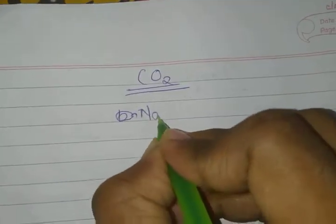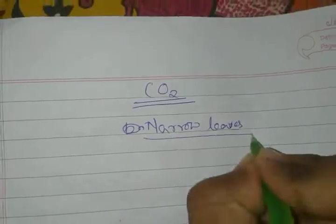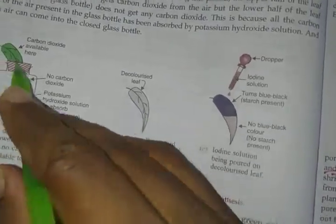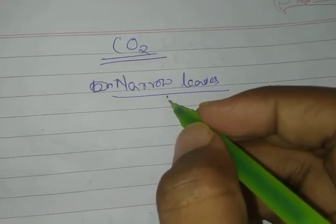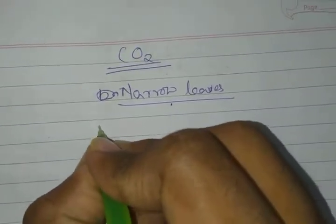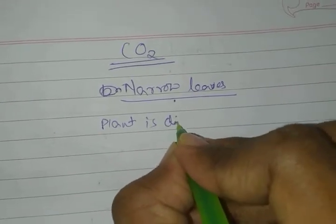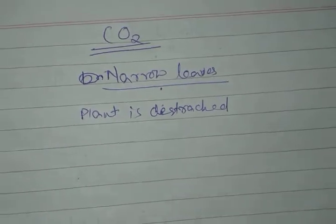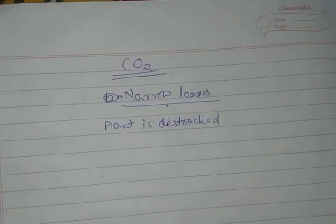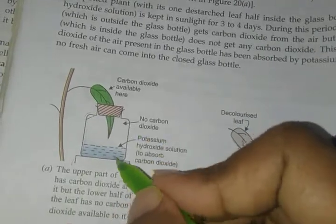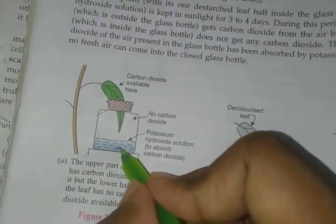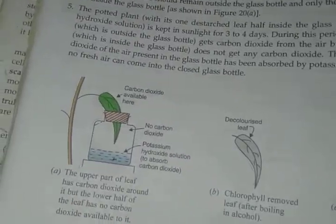For the carbon dioxide experiment, we will take a plant with narrow leaves — the leaves should be tapering. First, the plant with narrow leaves is de-starched. After that, you need to perform some extra steps. You will take a flat-bottom glass jar and put potassium hydroxide inside it. Potassium hydroxide absorbs carbon dioxide.